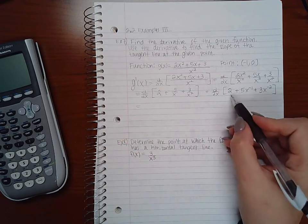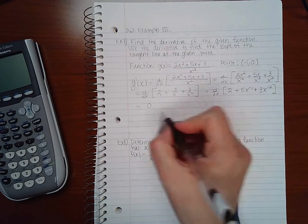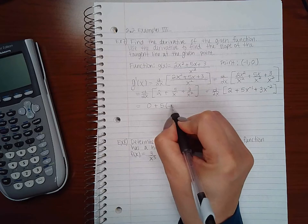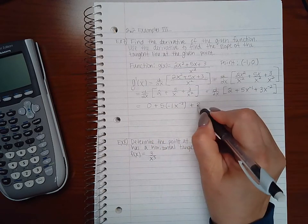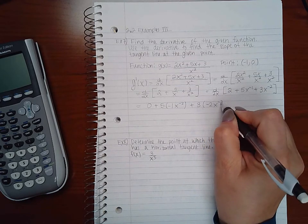Now I'm going to use my rules. The derivative of a constant is 0. The derivative of 5x to the negative 1 is 5 times negative 1x to the negative 2 plus 3 negative 2x to the negative 3.